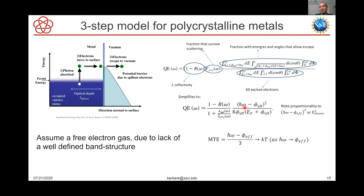The expression for quantum efficiency has components accounting for reflectivity, the fraction of electrons that survive transport without scattering, and the fraction at angles allowed to escape — divided by all excited electrons. This simplifies to show that quantum efficiency is roughly proportional to (ℏω - φ)², where ℏω is the photon energy and φ is the work function — this quantity being the excess energy. From this, the mean transverse energy yields the famous relation Dave Dowell put forth: MTE equals one-third of the excess energy. As the excess energy goes to zero, or photon energy approaches the work function, MTE approaches kT — the temperature limit often observed in cathodes.